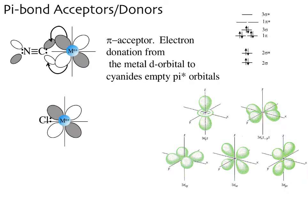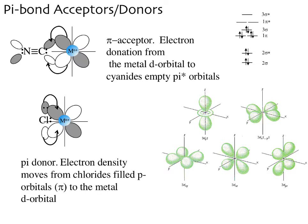Now in the case of a ligand like chloride, chloride also has a set of orbitals with the same symmetry as the pi star orbitals on the cyanide. But in this case, these p orbitals on the chloride are filled — they have an electron pair. So instead of backbonding, the chloride is going to donate that electron density in a pi fashion into the dxz orbital of the metal. Chloride is considered a pi donor ligand, and it will contribute electron density from its filled p orbitals into the metal d orbitals.